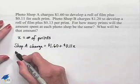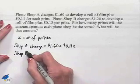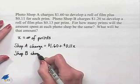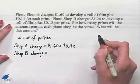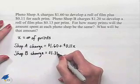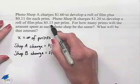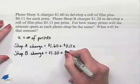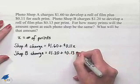Shop B, we're also going to be able to figure out the charge from shop B by taking its flat rate, which is $1.20, and adding to that 13 cents per print. So we're going to be adding to that 0.13X.